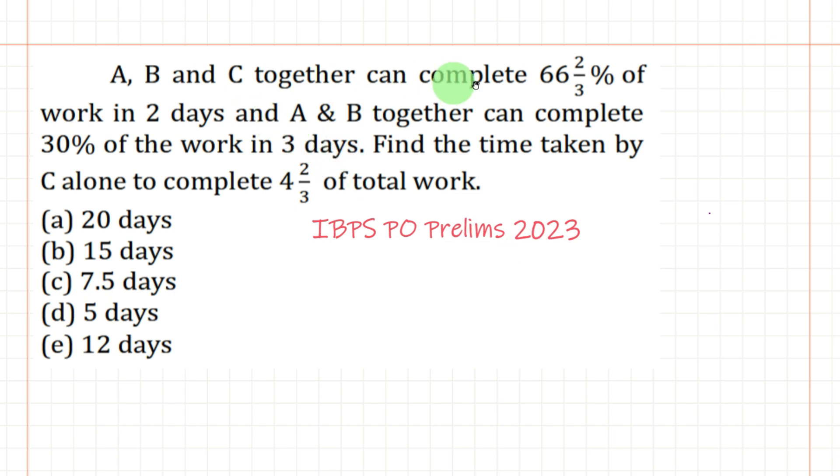So A, B and C together can complete 66 2/3 percentage of work in 2 days and A and B together can complete 30 percent of the work in 3 days. Find the time taken by C alone to complete 4 2/3 of total work.